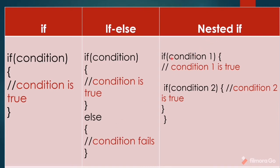Then nested if. Nested if will have two ifs within it. First if condition 1 is true, it will come inside and check if condition 2 is also true. If both are true, it will execute whatever actions are inside condition 2. But if condition 2 fails, it will exit up to condition 1. If condition 1 also fails, it will not come inside any of them and will go out.